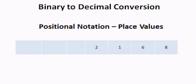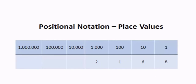I have the number 2,168 here. If we look at the place values of the number 2,168, we can see that the place values have the ones place, the tens place, the hundreds place, the thousands place, 10,000, 100,000, and million. These are the place values of the base 10 decimal number system.